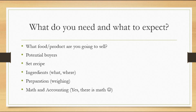Next, what do you need and what to expect? First, what food or product are you going to sell? Lecheplan? Cordon Bleu? Pulboron? Or milk tea? Pangalawa, potential buyers — sino yung mostly bibili ng produkto natin? Mga bata? Estudyante? Teenager? Or mga yuppies? Pangatlo, set recipe. Pangapat, ingredients — ano at saan tayo bibili ng ingredients? SM? Pure Gold? Or sa wet market? Preparation: we need a weighing scale kasi importante ito sa costing. Lastly, math and accounting — may math talaga and we really need math.